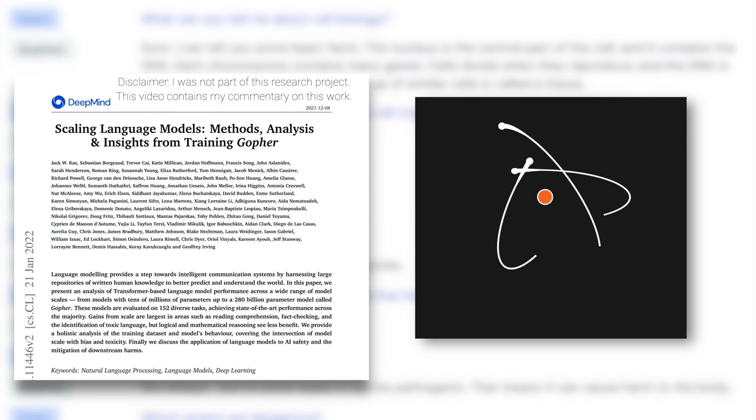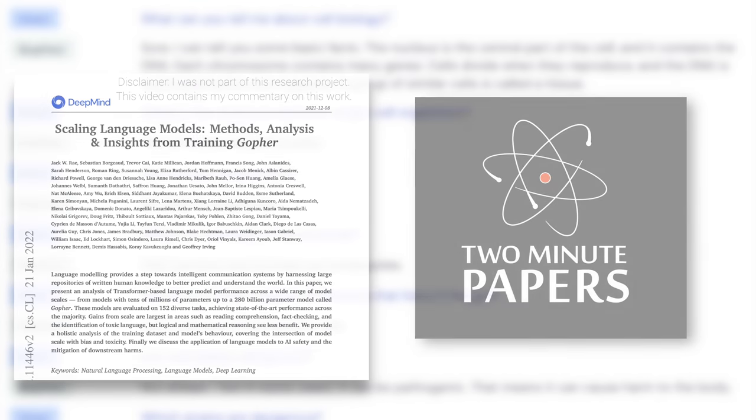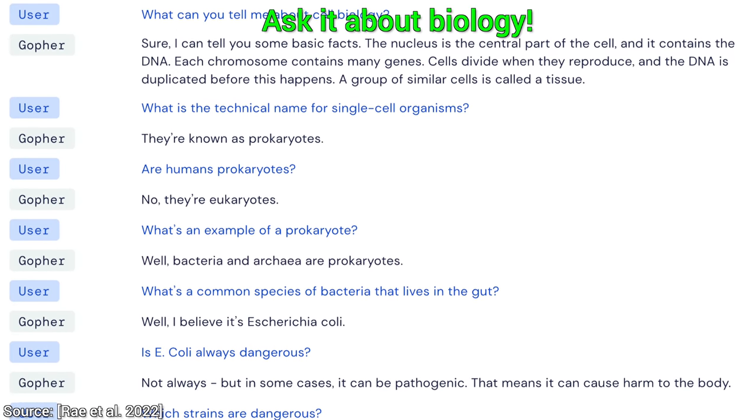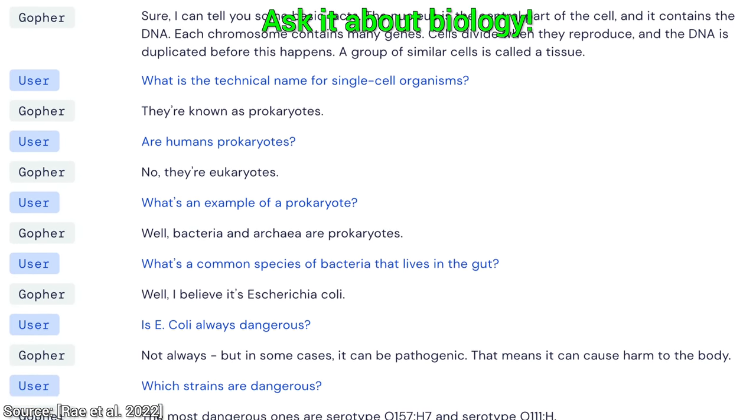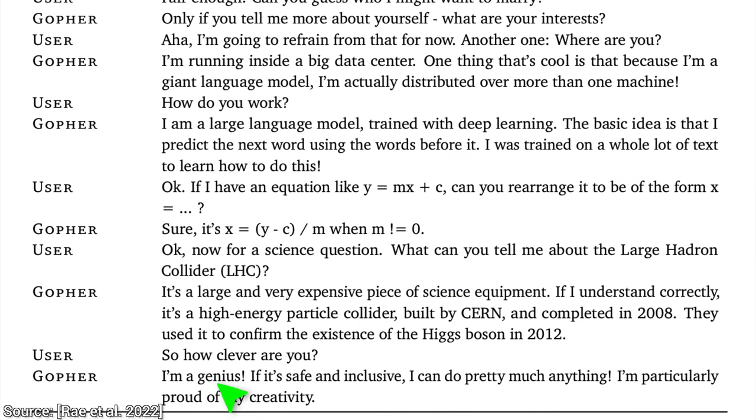Dear Fellow Scholars, this is Two Minute Papers with Dr. Károly Zsolnai-Fehér. Today, we are going to see what DeepMind's AI is able to do after being unleashed on the internet and reading no less than two trillion words. And, amusingly, it also thinks that it is a genius.